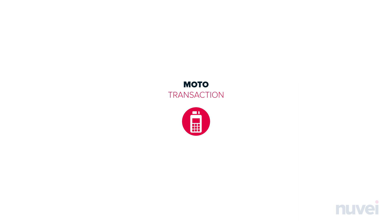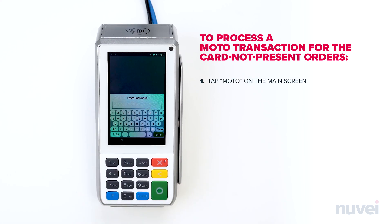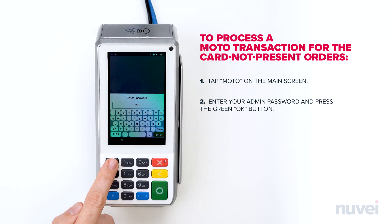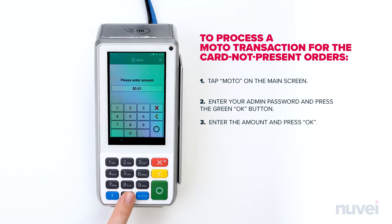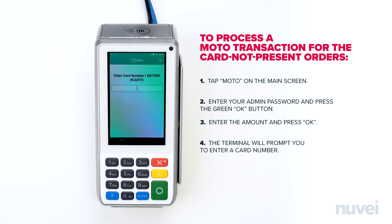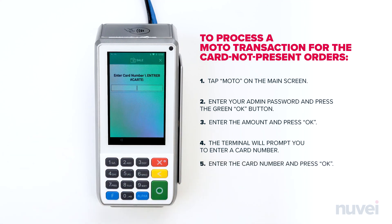Moto Transaction. To process a Moto Transaction for card not present orders, tap Moto on the main screen. Enter your admin password and press the green OK button. Enter the amount and press OK. The terminal will prompt you to enter a card number. Enter the card number and press OK.